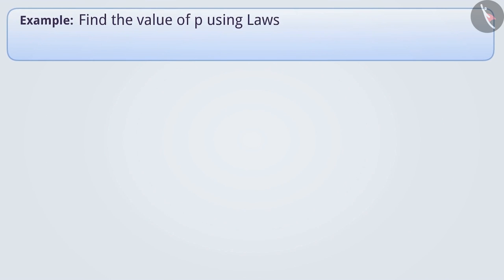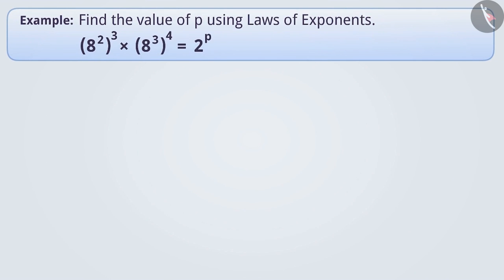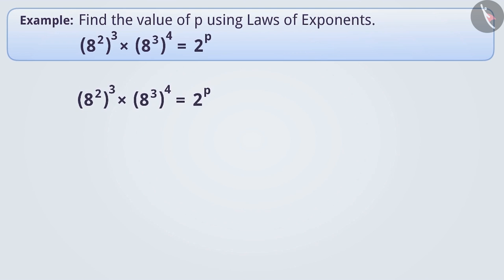Find the value of p using laws of exponents. To find the value of p, we have to solve the left-hand side so that we get only 8 as the base. So let's solve 8 square to the power of 3, multiplied by 8 cube to the power of 4.